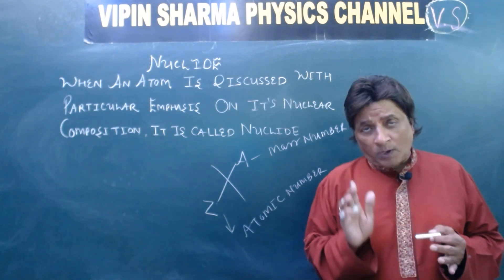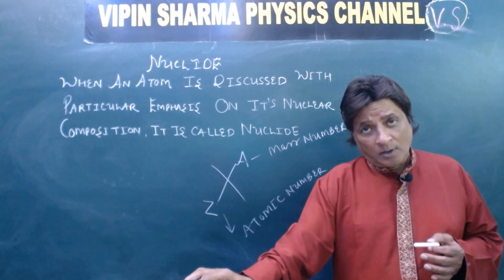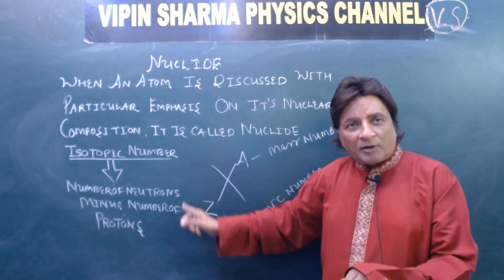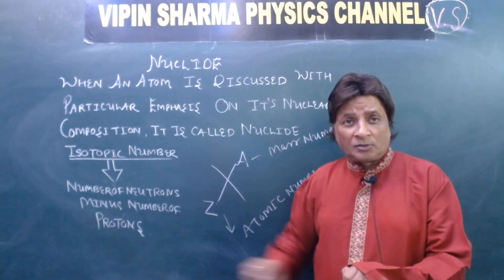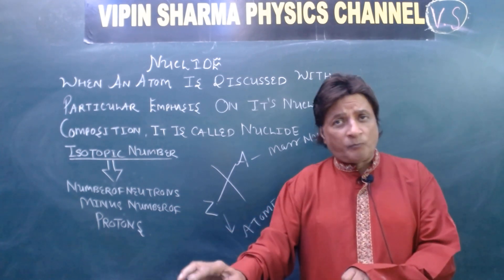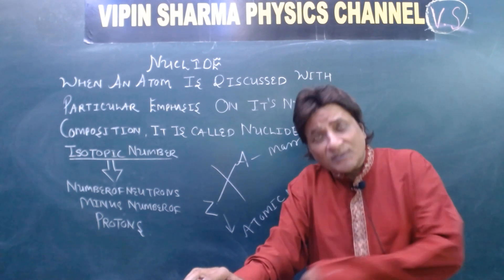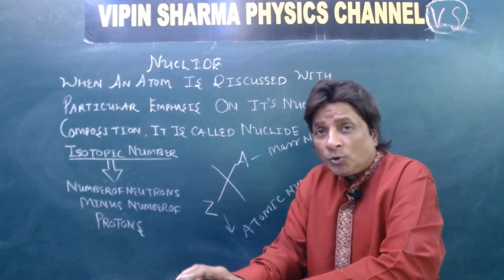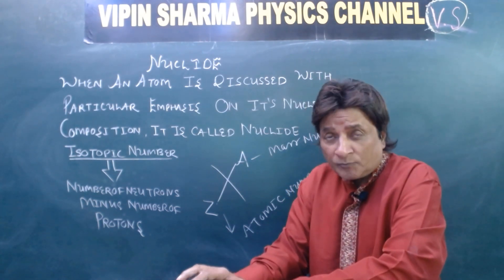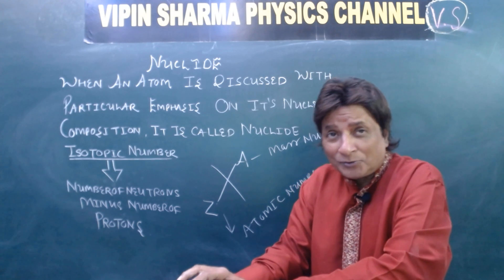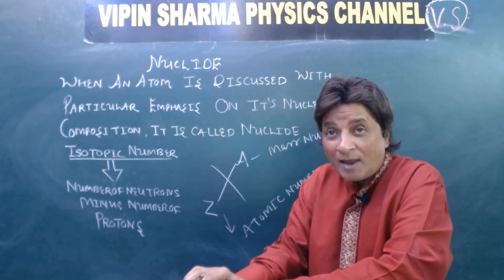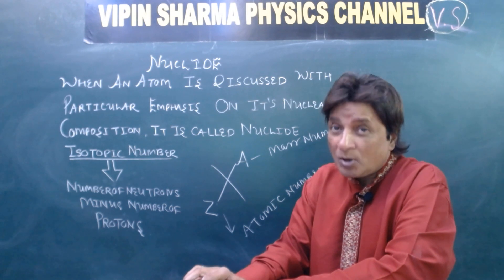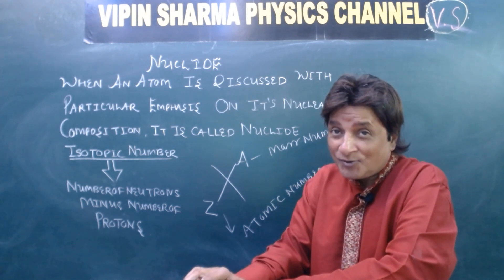Now, I'm going to tell you something about isotopic number. Isotopic number means the number of neutrons minus the number of protons — in other words, the excess neutrons present in the nucleus of a nucleide. This is called the isotopic number. Interesting!